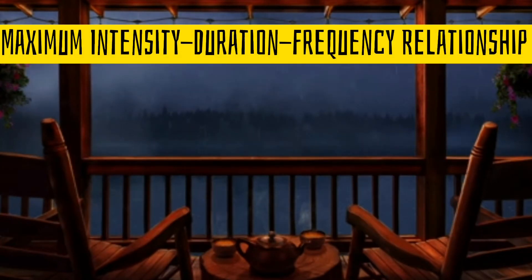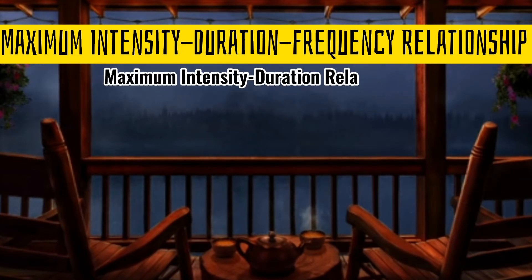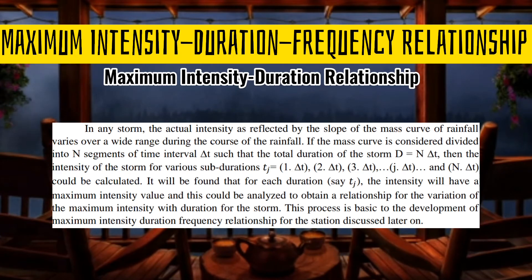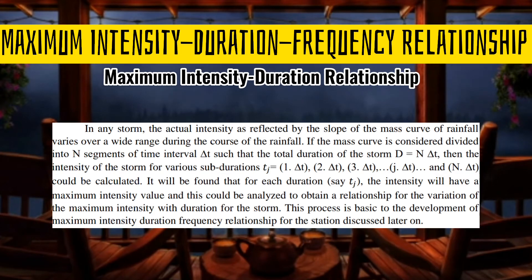The next topic is the maximum intensity-duration frequency relationship, a three-part topic. Starting with the maximum intensity-duration relationship: in a storm, the actual intensity is not maintained and varies over the course of time. According to the book, this is reflected by the slope of the mass curve of rainfall. If the mass curve is divided into n segments of time interval delta T, such that the total duration D equals n times delta T, then the intensity of the storm for various sub-durations Tj — 1 delta T, 2 delta T, 3 delta T, up to n delta T — can be calculated.